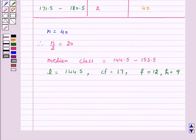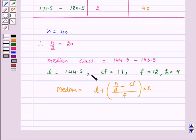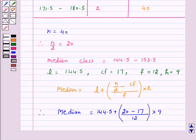According to our key idea, after finding the median class, we will use the formula. Median is equal to L plus n by 2 minus cf upon f into h. On substituting these values in this formula, we get median is equal to 144.5 plus 20 minus 17 upon 12 into 9.